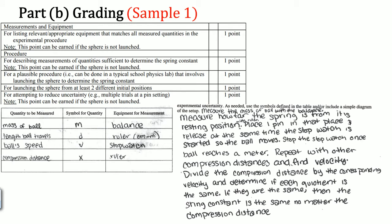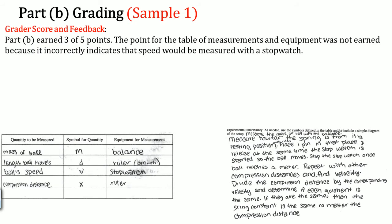Let's look at how example one is graded. We check: do they have relevant and appropriate equipment? Are the steps sufficient? Is the procedure possible? Did they try to reduce uncertainty? The graders say they did not earn the points for equipment because of one issue.